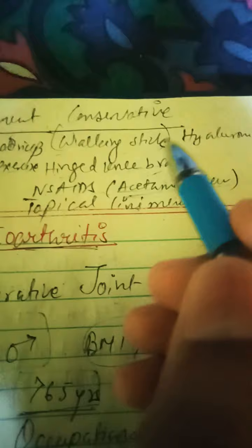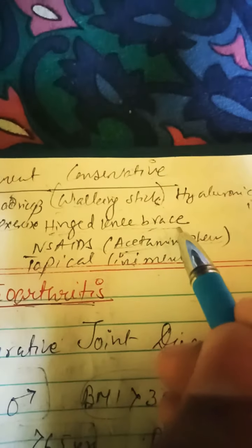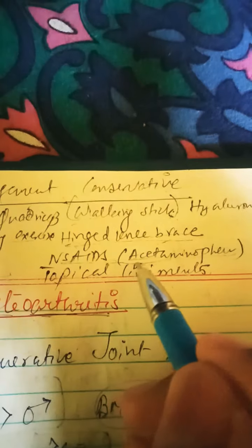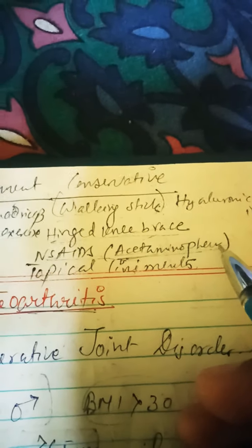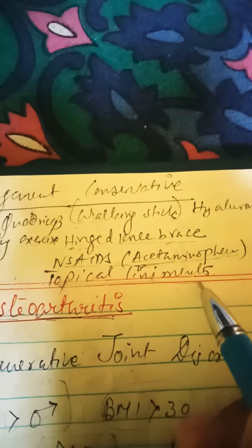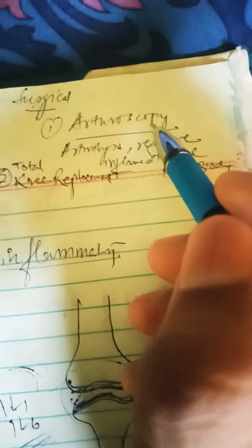For management, there is conservative and surgical management. In conservative management: give the patient a walking stick on the opposite hand, a hinged knee brace, NSAIDs and COX-2 inhibitors — acetaminophen is used to reduce pain and is the safest drug. Topical liniments can also be used, isometric quadriceps exercises are given, and injection of hyaluronic acid is given.